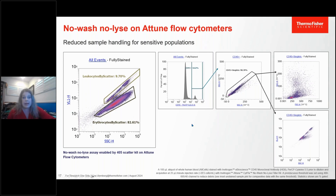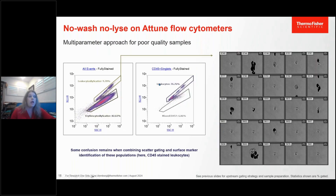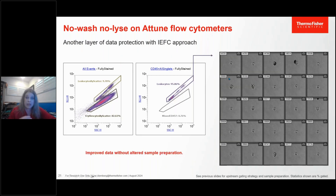We validated this workflow by distinguishing erythrocytes from leukocytes using a 405 scatter kit that uses the first channel on the violet laser. We validated this approach using CD45 staining — the population identified by scatter looks very similar to the CD45-identified population. When we image those populations, we can confirm that these are indeed pure leukocyte populations with no red blood cell contamination remaining in the gates.